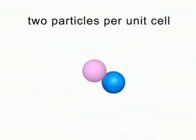Eight-eighths give one particle, and the one in the center gives another for a total of two particles.